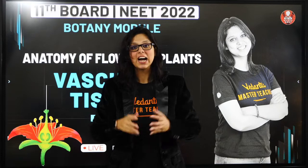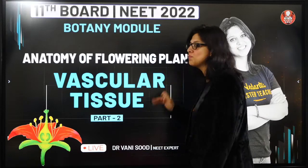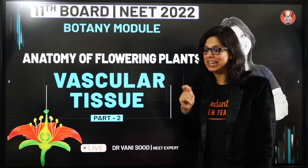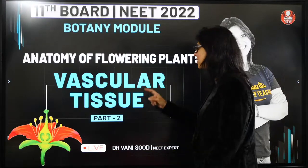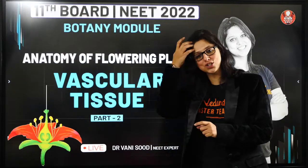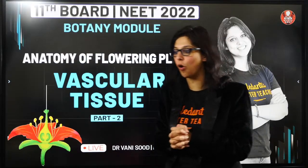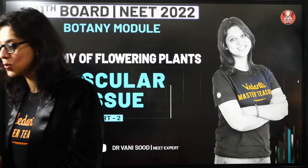Yes, it's live. Good evening everybody, this is Dr. Vani. On behalf of Vedanta Biotronic, I welcome you all to a very important and interesting session which is on the tougher side for children — anatomy of flowering plants, the botany module for Class 11. In today's class, we will be doing vascular tissues; this is Part 2 of anatomy of flowering plants.